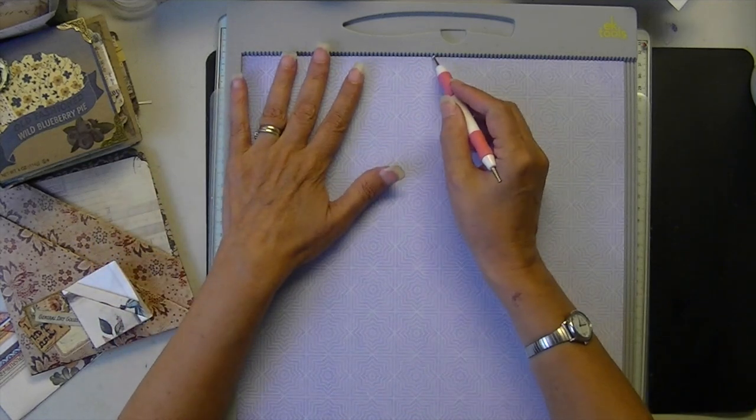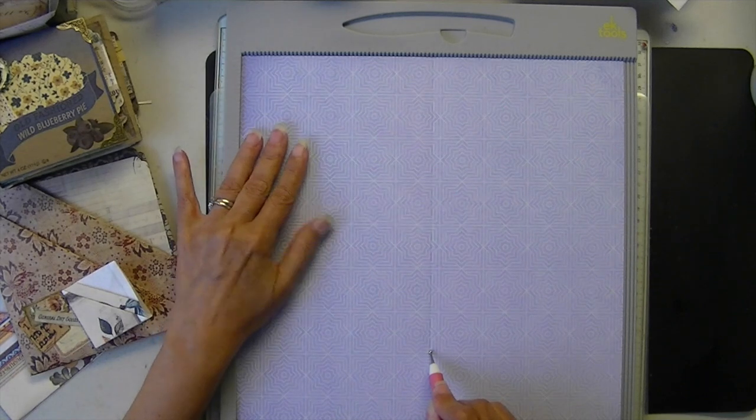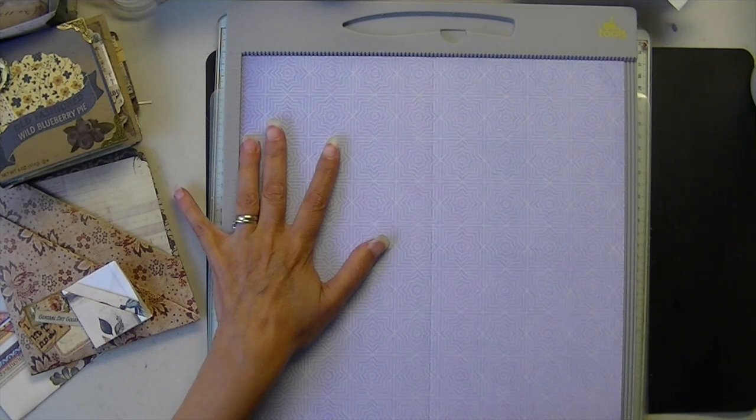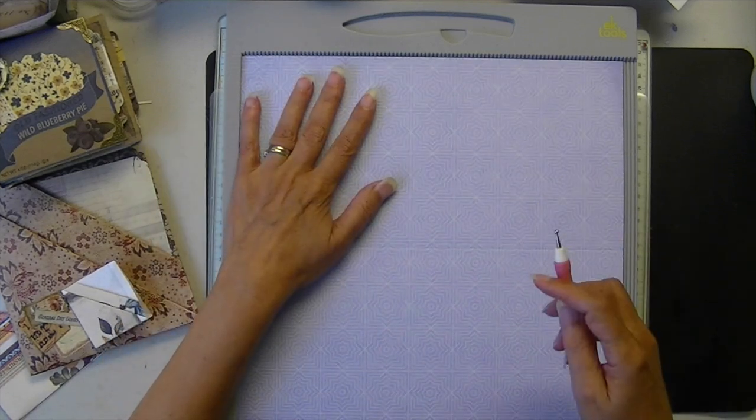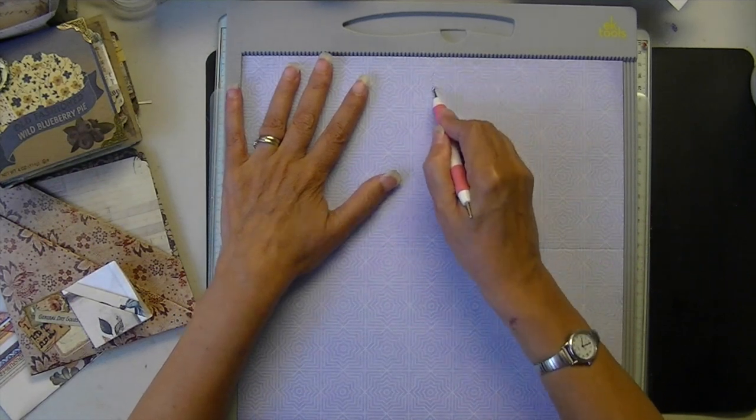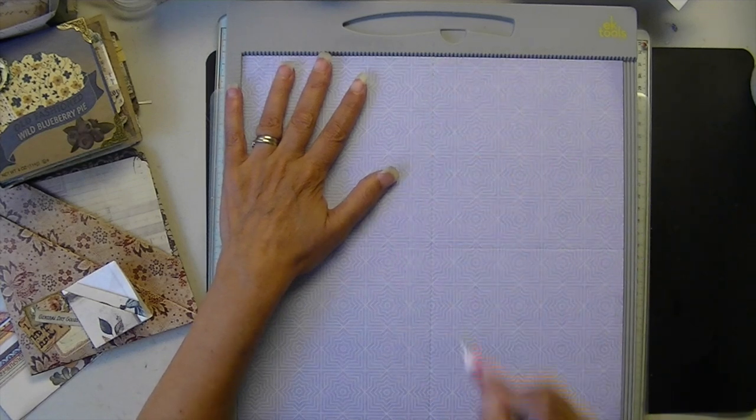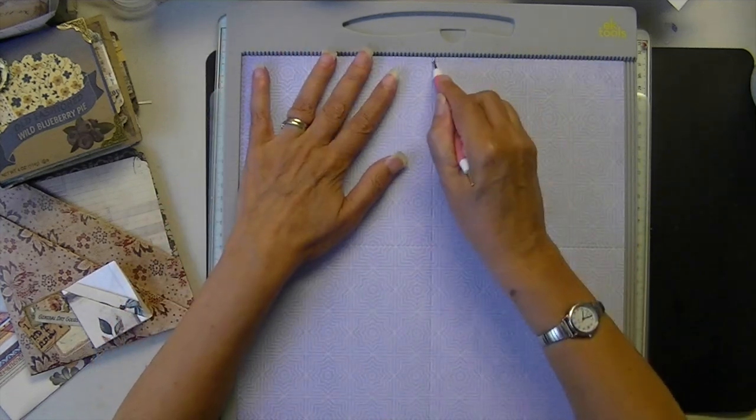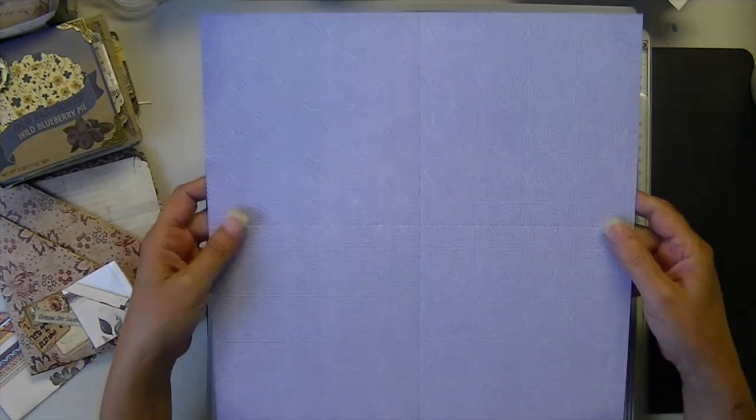Very simple. We are just going to score at 6. I hope this looks even, it's not looking even even though I measured it. Maybe it's just an illusion. We'll soon find out when we fold it. Make a quarter turn. Don't want to do that. And score again at 6.